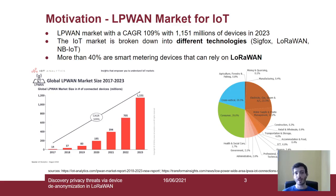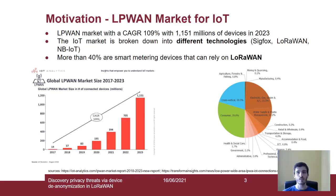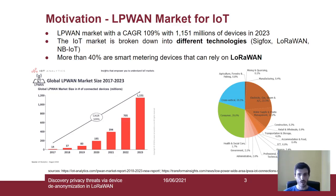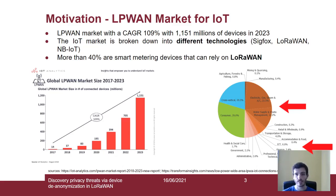The LPWAN market is an ever-increasing market, with a CAGR index of more than 100%. It has been predicted to connect more than a billion devices in 2023, according to IoT Analytics. The IoT market is broken down into different technologies like Sigfox, LoRaWAN, or NB-IoT — all technologies with their strengths and weaknesses. If we look at the pie chart on the right, we can see that more than 40% of these devices are smart metering devices, which can optimally work with LoRaWAN.